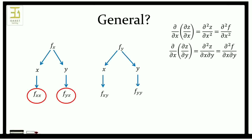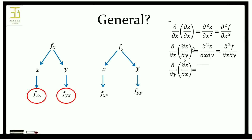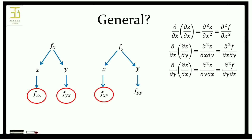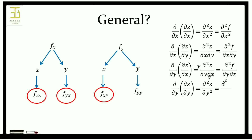Also, dou by dou y of dou z by dou x is equal to dou squared z by dou y dou x, or dou squared f by dou y dou x, which can also be written as f_xy. And dou by dou y of dou z by dou y is equal to dou squared z by dou y squared, or f_yy. In some ordinary cases, mixed partial derivatives are equal: dou squared z by dou x dou y equals dou squared z by dou y dou x.